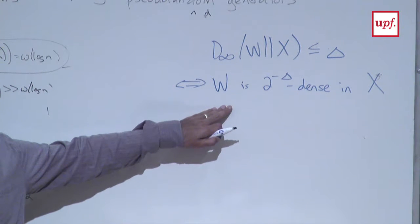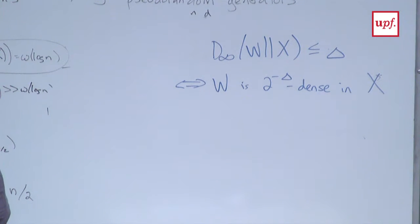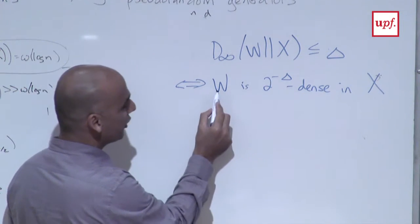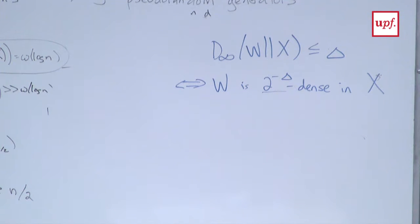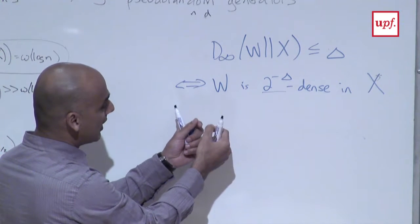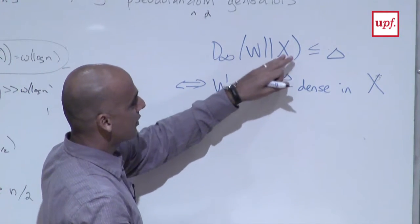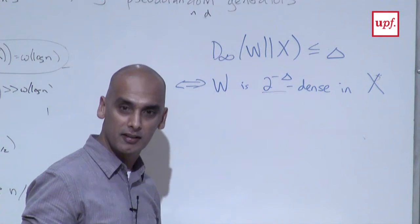Conditioning on the event of probability delta is being delta-dense. So this is: you can obtain W from X by conditioning on an event of probability 2^{-delta}. Small max divergence means you can think of W as a large portion of X. The divergence can be infinite if X assigns zero probability to something in W's support — same for the Shannon-theoretic version.